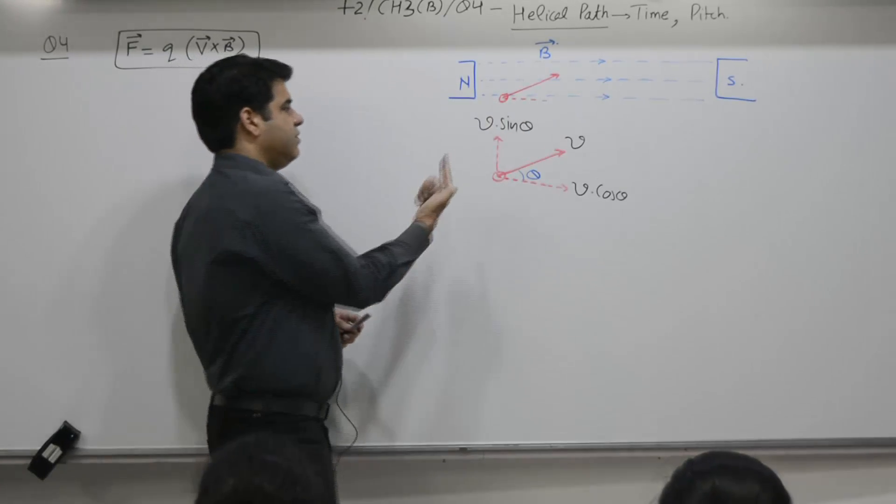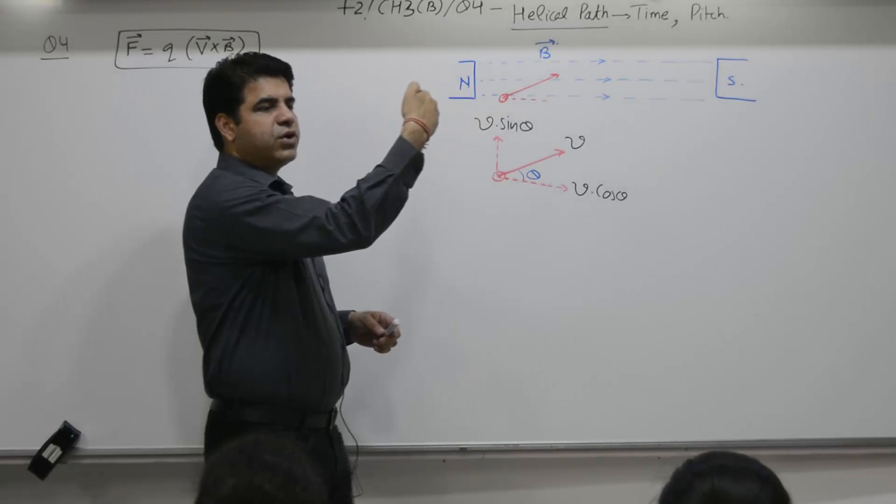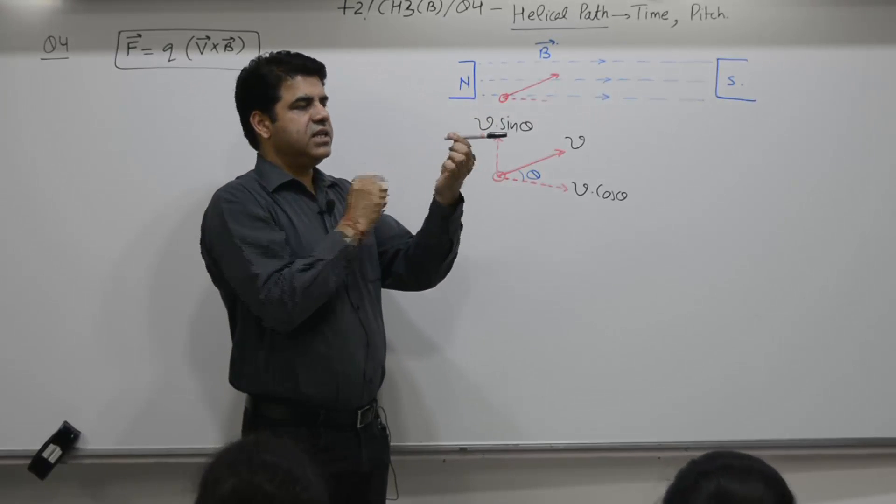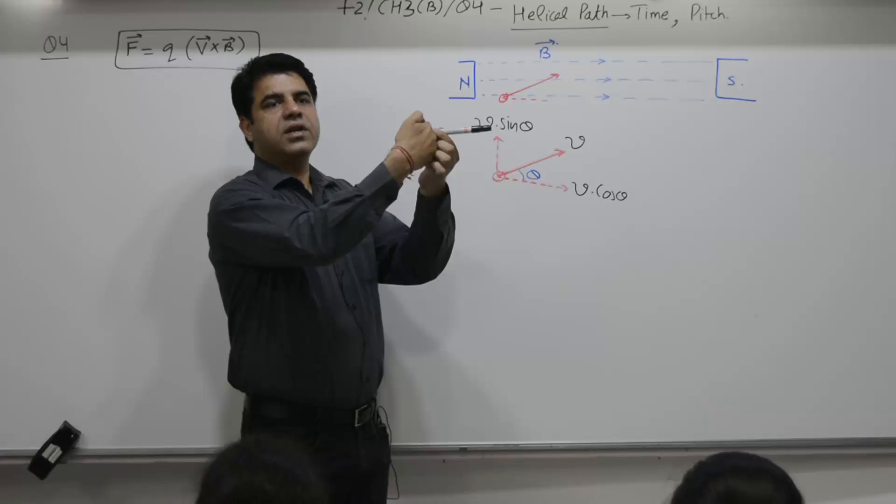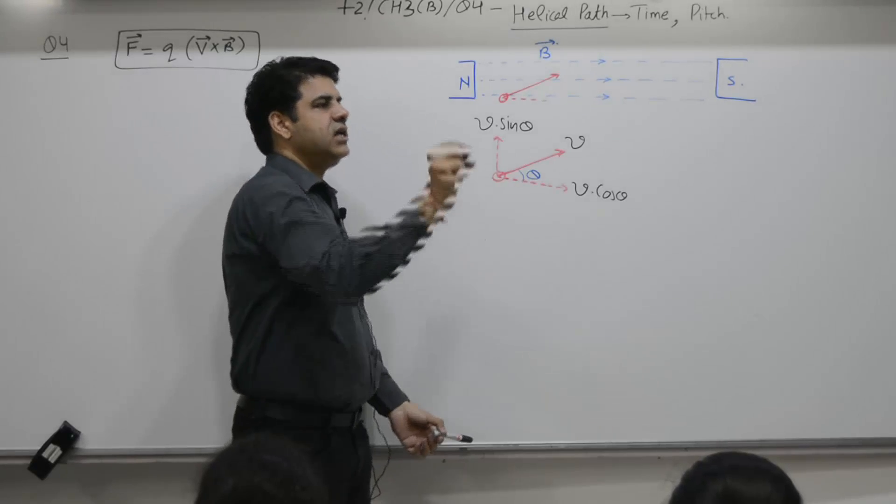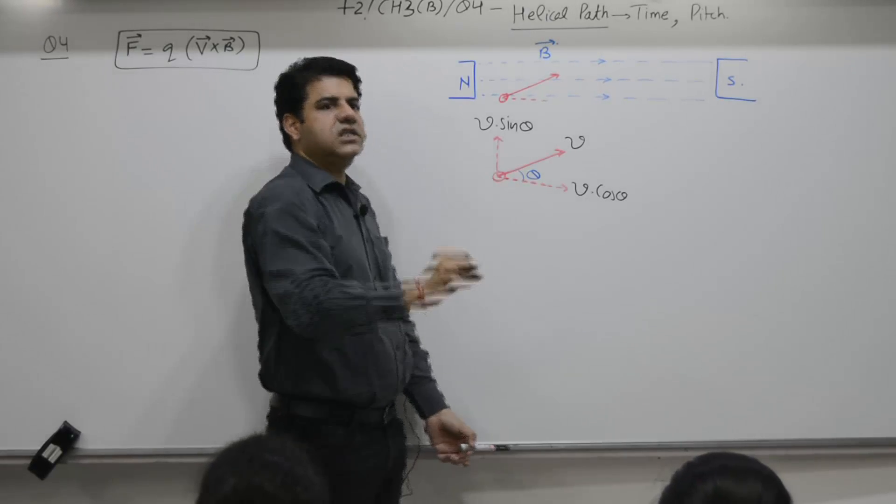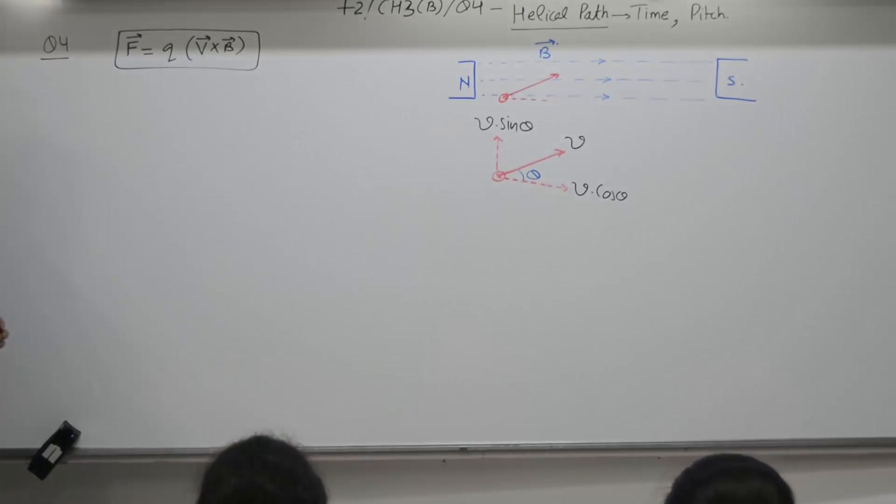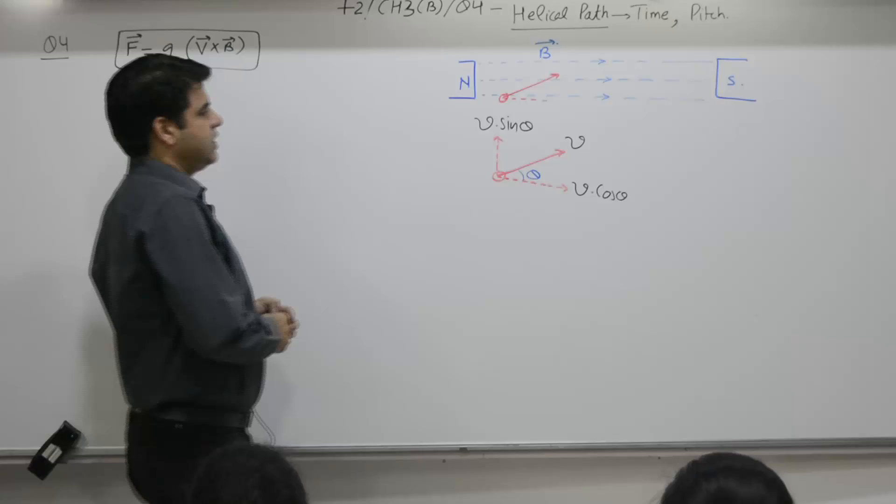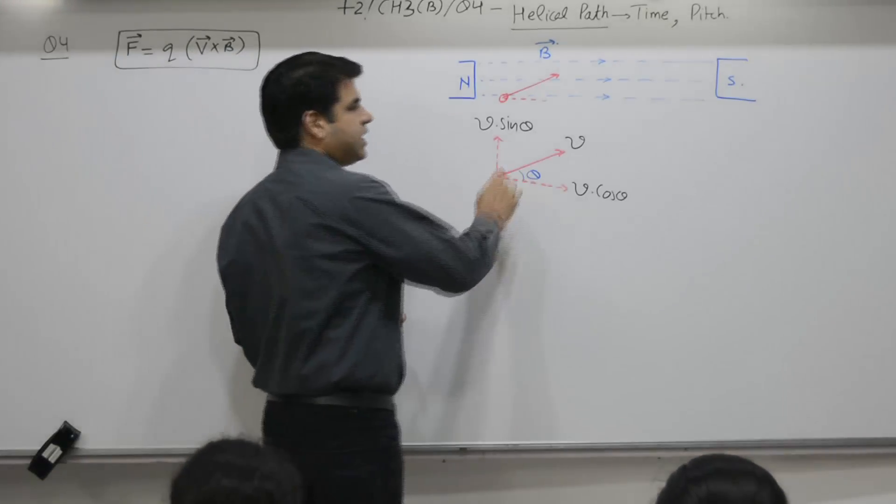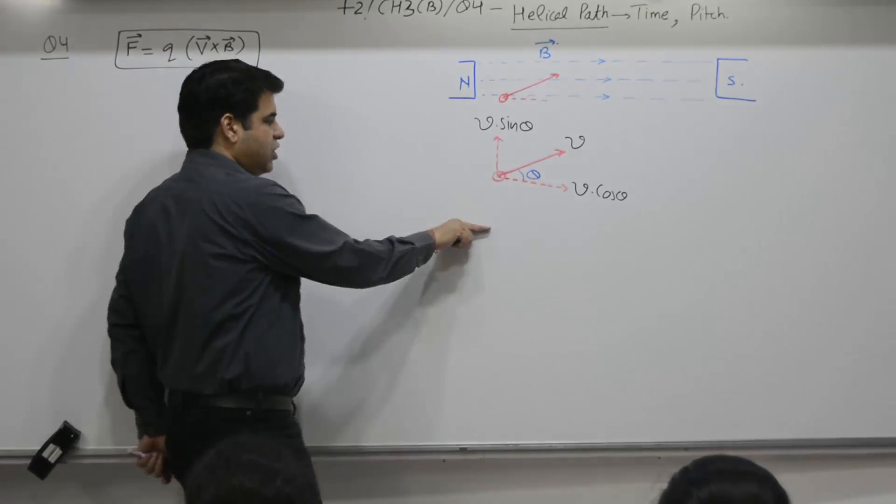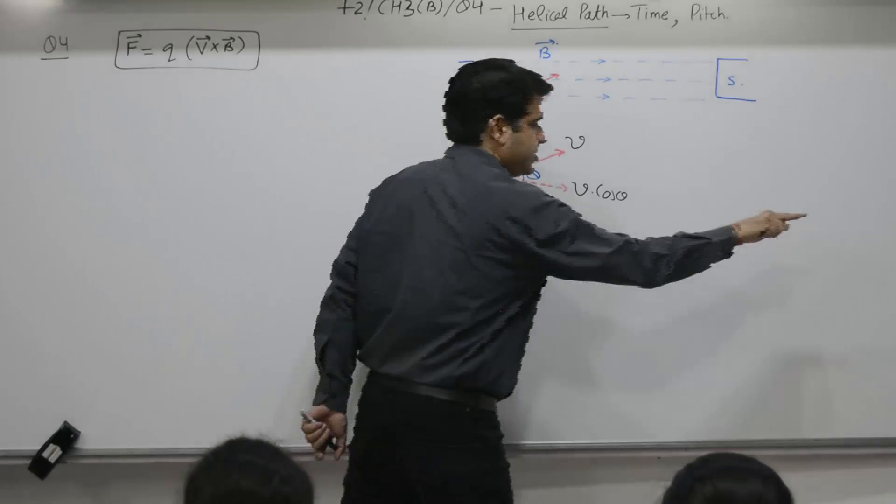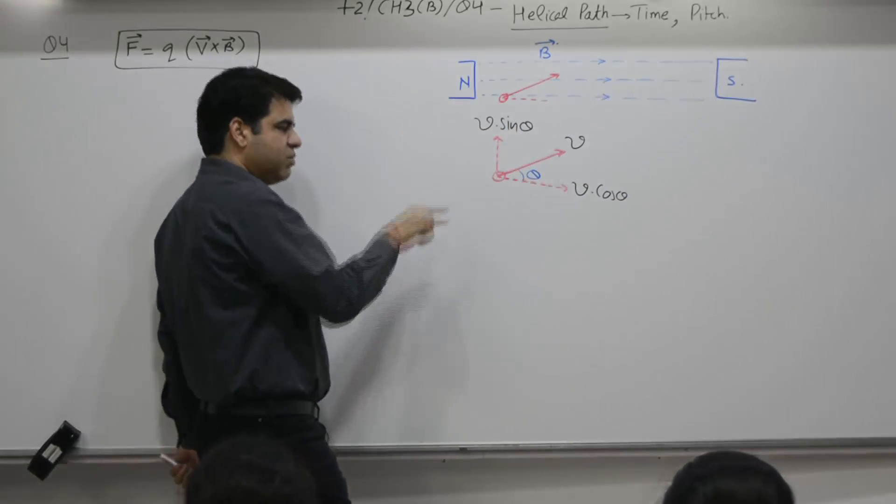Second, what about v sin theta? This is perpendicular. Magnetic field is this, v sin theta is perpendicular. Because of perpendicular component, the charge particle moves in a circle. Because of horizontal component, it moves straight. Because of v sin theta, it moves in a circle.